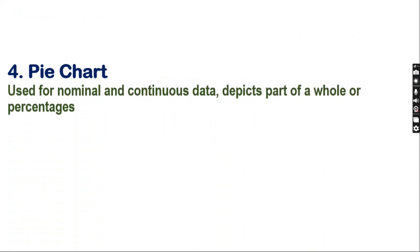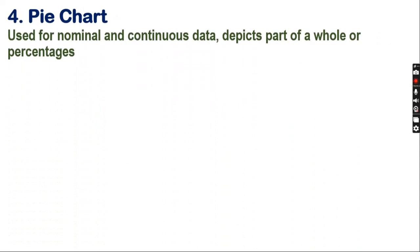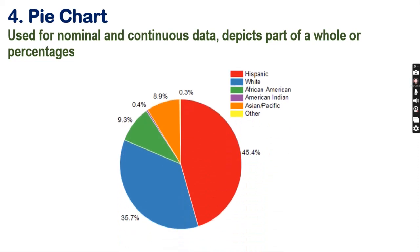Number 4: Pie chart. Pie chart can be used to depict nominal or continuous data, and also it can be used to depict part of a whole or percentages. In this example, we can see that the pie chart is used to show the percentages of different ethnic groups.